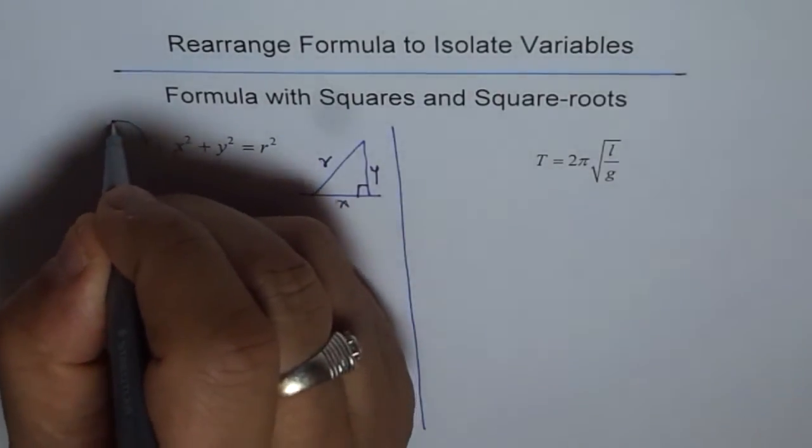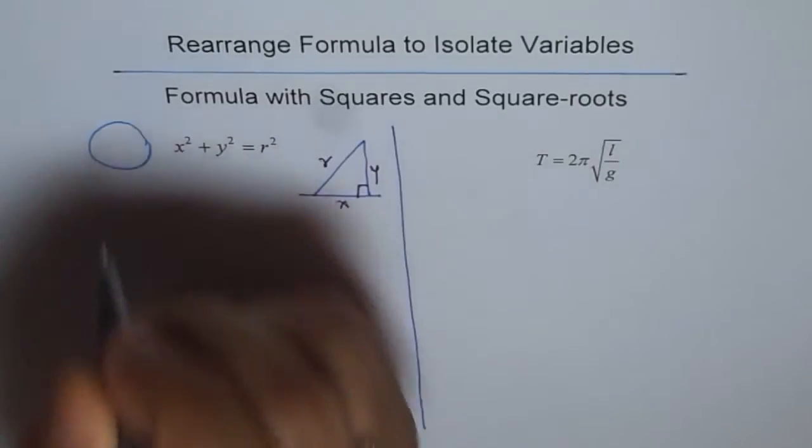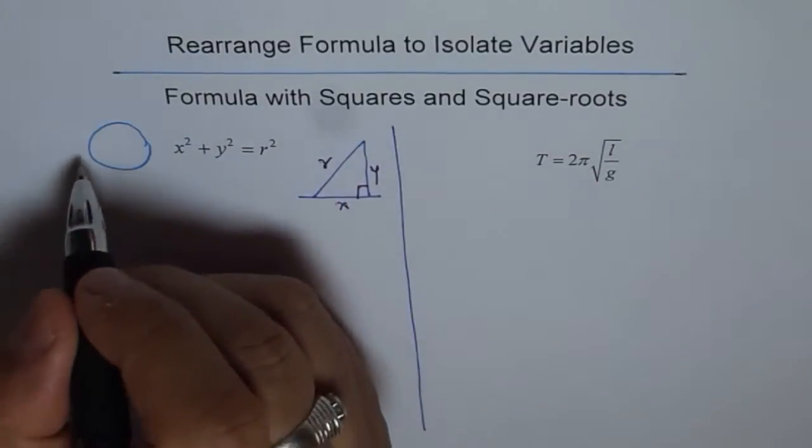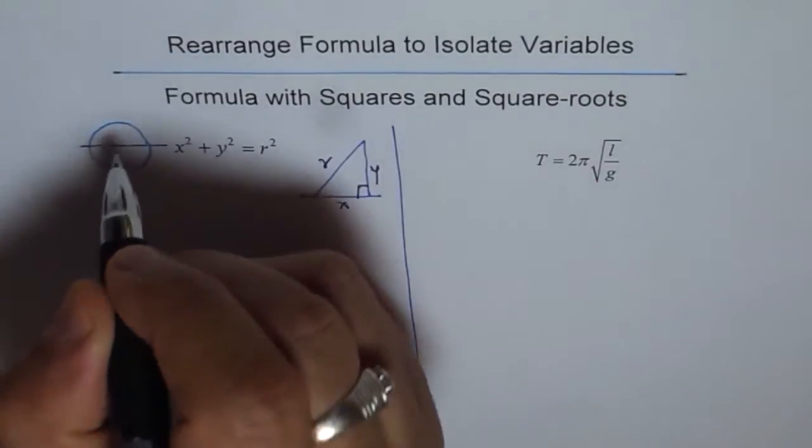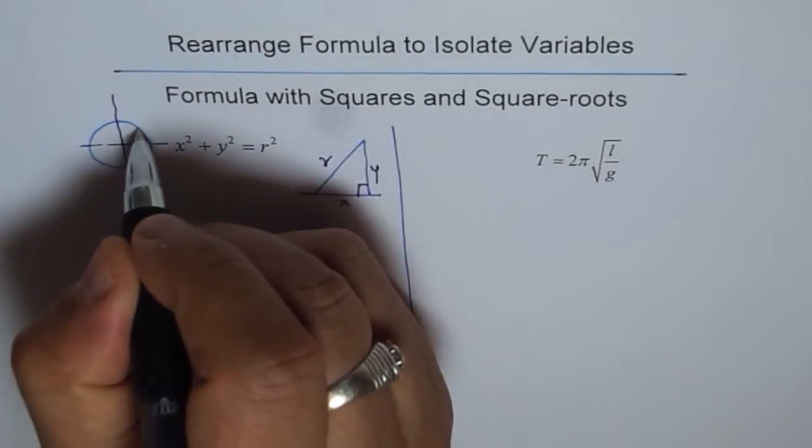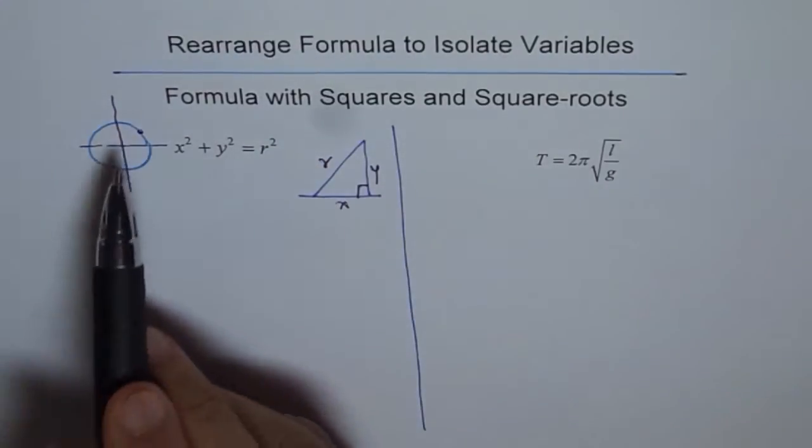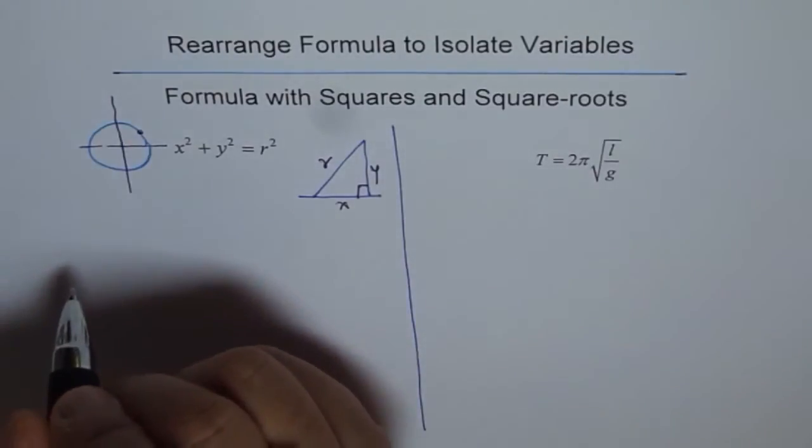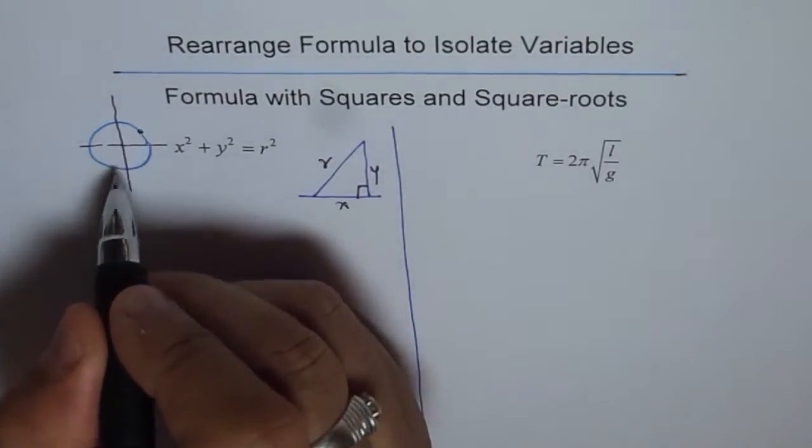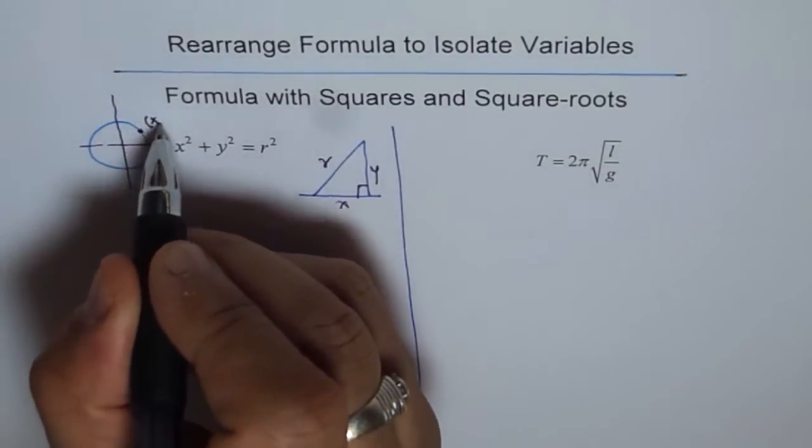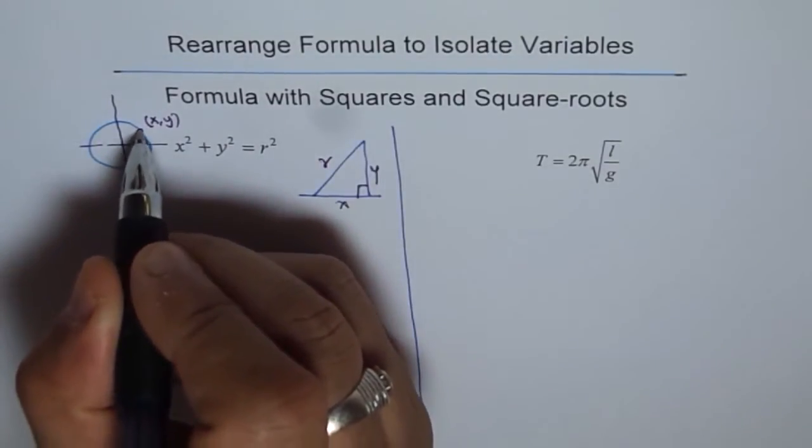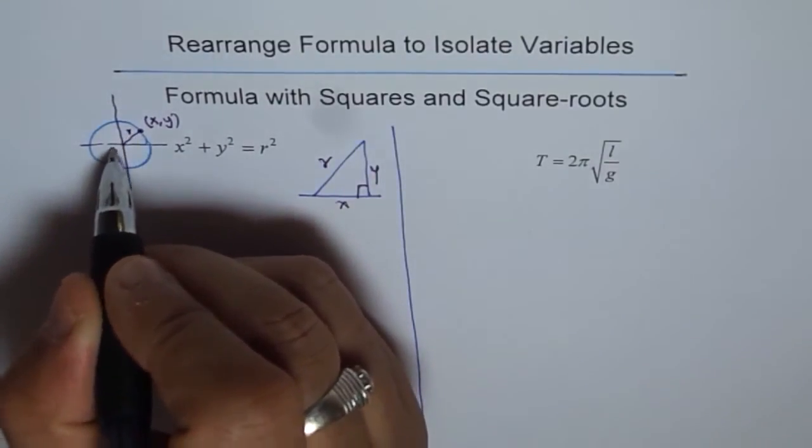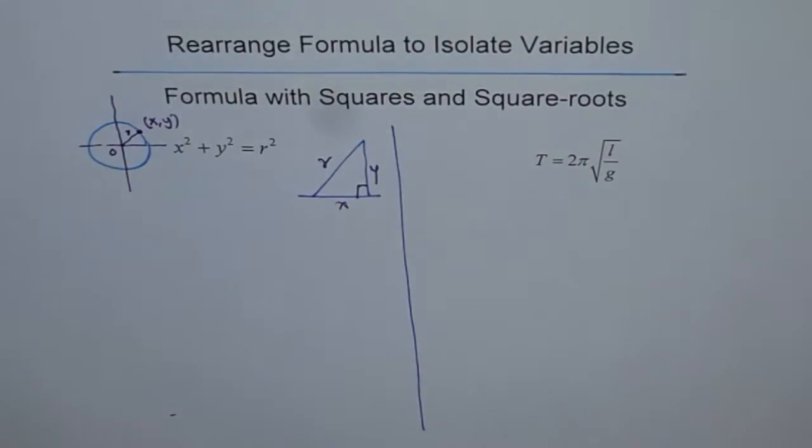If I draw a circle with center at the origin, then any point on this circle is found by using this formula. That is the equation of the circle. Any point could be (x, y), and r is the distance from origin O.